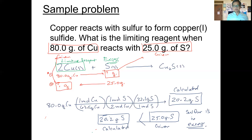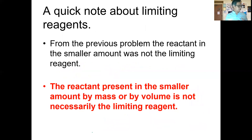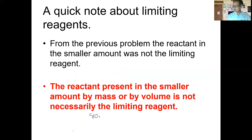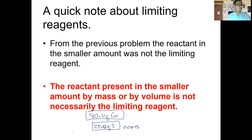I want to point out something important. In this example we started with 80 grams of copper and 25 grams of sulfur — less sulfur than copper in terms of mass. But as you saw, sulfur was not our limiting reagent; it was actually the excess. So do not automatically assume that just because you start with less of a particular reactant that it will be your limiting reagent. That will not always be the case. You have to do the stoichiometric calculation to make that determination.